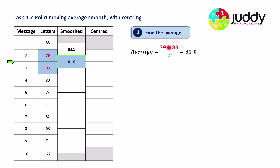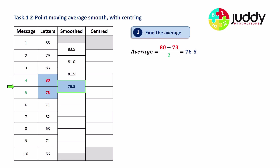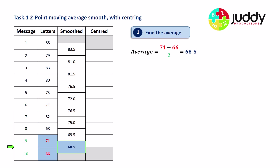79 plus 83 divided by 2 equals 81. We continue moving down — that works out to 81.5, then 76.5, and we continue this process. The final pair is message nine with 71 letters and message ten with 66 letters, giving an average of 68.5 aligned between messages nine and ten.